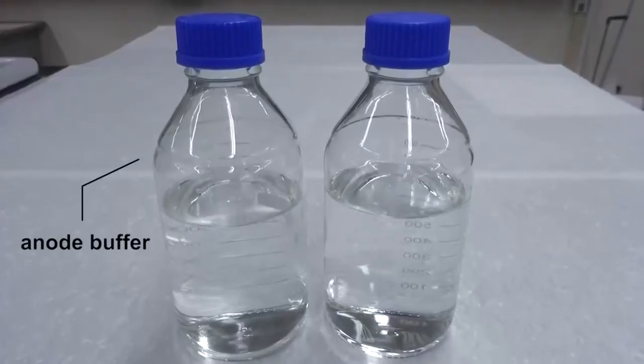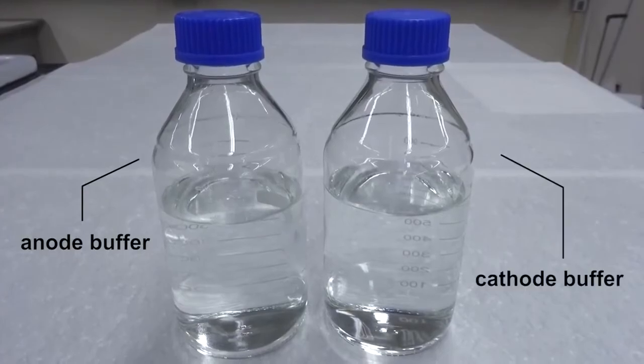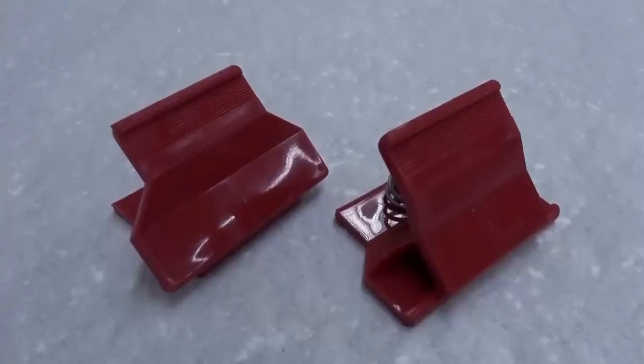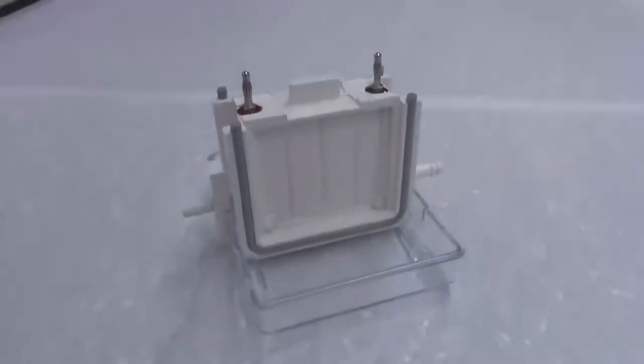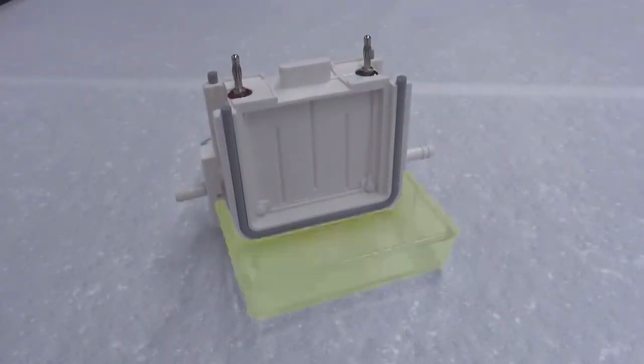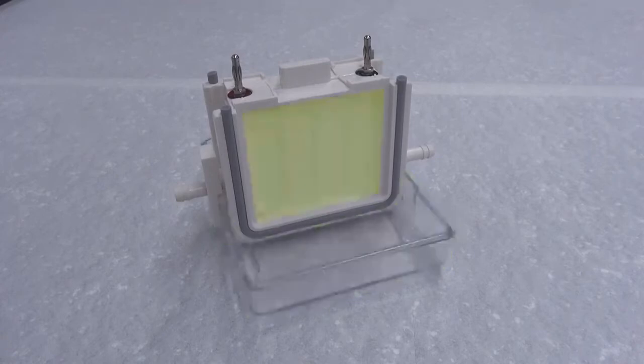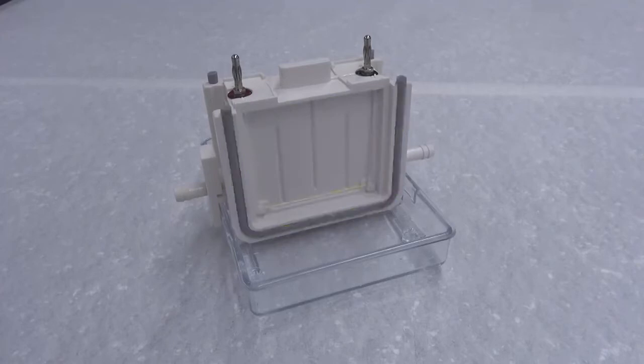Before assembling, prepare the anode buffer and the cathode buffer. You will also need two red clamps, a tank lid, power lines, and an electrophoresis tank. The electrophoresis tank consists of a lower anode tank, an upper cathode tank in which the gel cassette sandwich will be mounted, a U-shaped gasket, conductive platinum wires, and electro-plugs.